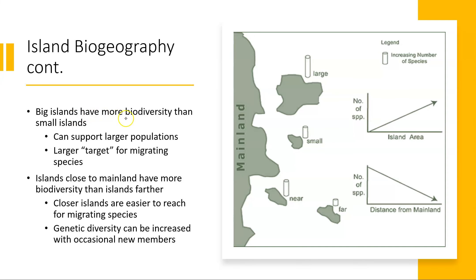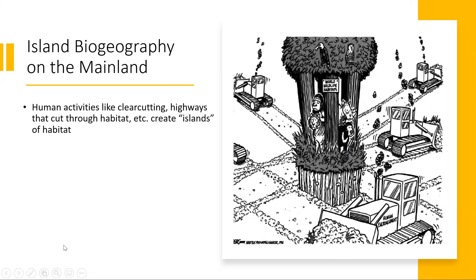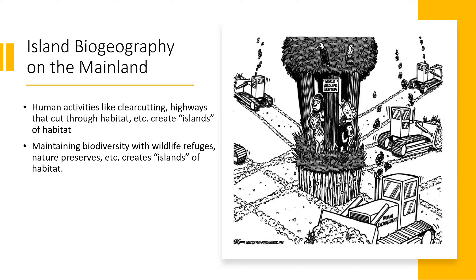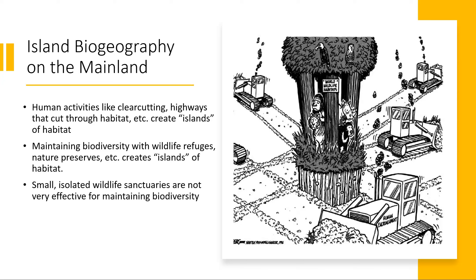Big islands tend to have more biodiversity than small islands, and islands close to the mainland tend to have more biodiversity than islands farther away. This applies to the mainland as well. Human activities like clear-cutting, building highways through habitat, and developing cities create these sort of islands of habitat — small areas of unspoiled habitat surrounded by agricultural fields or city blocks. Wildlife refuges and nature preserves can function as these isolated habitat islands. Just like small isolated islands support less biodiversity, small isolated nature preserves far from each other cannot support high levels of biodiversity.